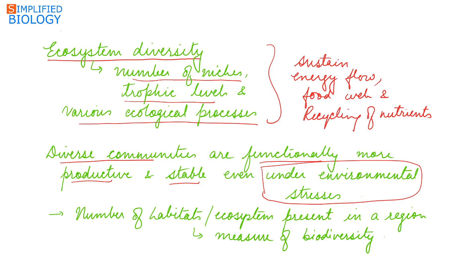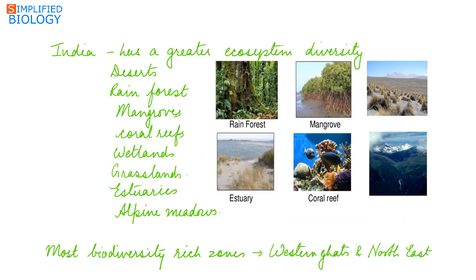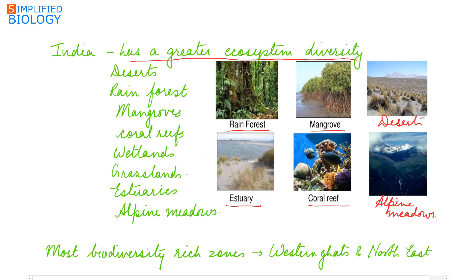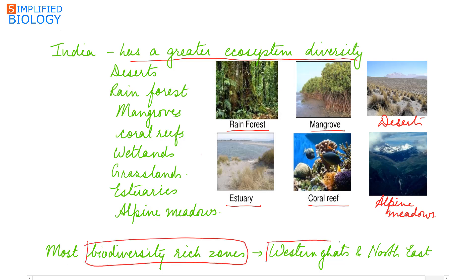The more the habitats or ecosystems present in a region, the more diverse it is. India has greater ecosystem diversity than a Scandinavian country like Norway — it consists of deserts, rainforests, mangroves, coral reefs, estuaries, wetlands, alpine meadows, and grasslands. The most biodiversity-rich zones of India are the Western Ghats, accounting for only 4% of the geographical area, and the Northeast, accounting for about 5%.